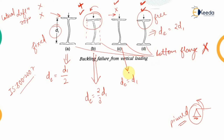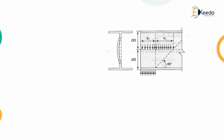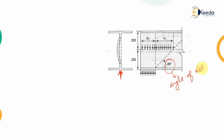When analyzing a section for web buckling, we need to understand the load distribution diagram. If the I-section is subjected to a load from below — meaning subjected to a reaction — the load is assumed to distribute at an angle of 45 degrees. This angle of distribution is taken as 45 degrees in the case of web buckling only.